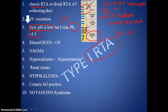The PCT usually functions in HCO3− reabsorption. As this function is maintained, the fractional excretion of bicarbonate will be less than 10%. Whereas in type 2 RTA, the PCT is affected, causing increased excretion of bicarbonate, so there it will be more than 10%. This results in normal anion gap metabolic acidosis, and urine anion gap will be positive.